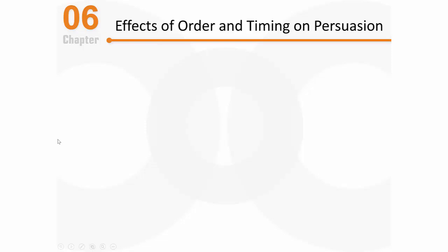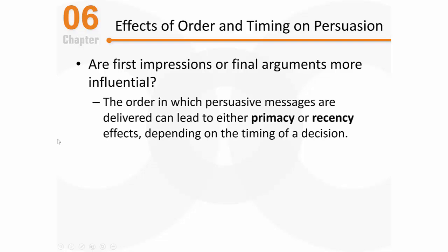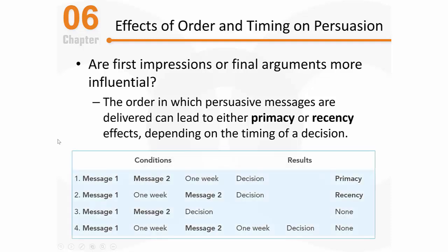We're talking about the content of a persuasive appeal — what people say and how they say it. One good question is whether first impressions or final arguments are more influential. If you're in a debate trying to persuade an audience, is it better to speak first or speak last? It turns out that order can be relatively important. The order in which a persuasive message is delivered can lead to either primacy effects or recency effects, and it really depends on the timing of the decision.